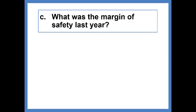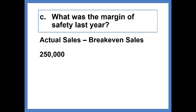What was the margin of safety last year? Since we were basing this on actual sales for last year, we can take actual sales minus break-even sales to get the margin of safety. Actual sales were 250,000 units of service. Break-even sales were 38,462. That computes to a margin of safety of 211,538 units of service. So, a fairly significant margin of safety for this company.